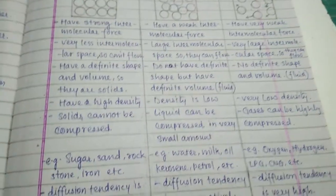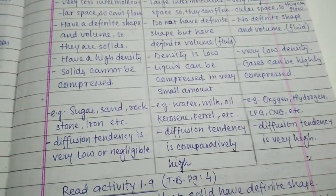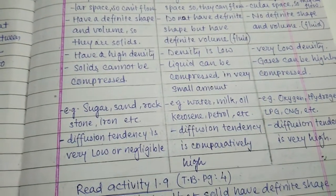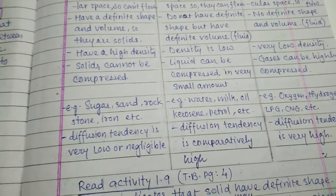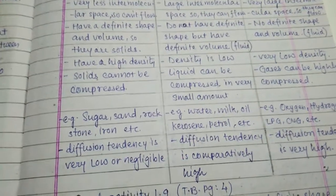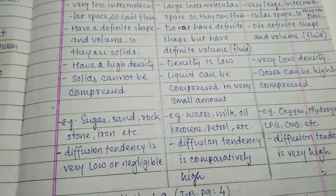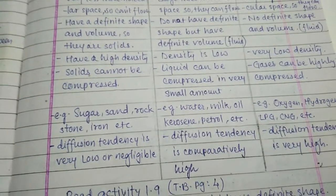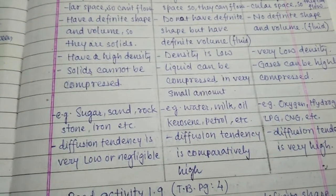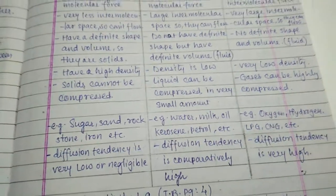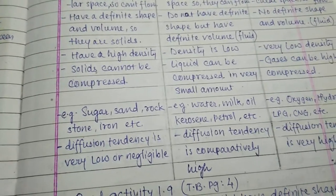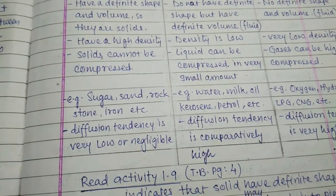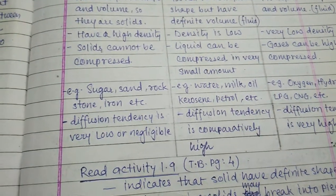We have experienced at home that ice floats on water — it floats on the surface of water. However, if you take a wax cube and place it in liquid wax, the solid wax cube sinks to the bottom. This shows that the density of solid ice is less than that of liquid water, which is why ice floats.